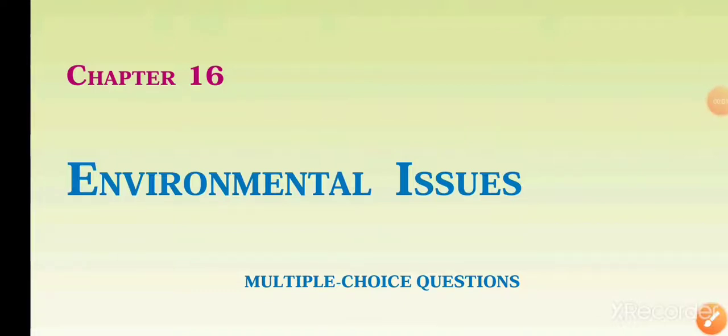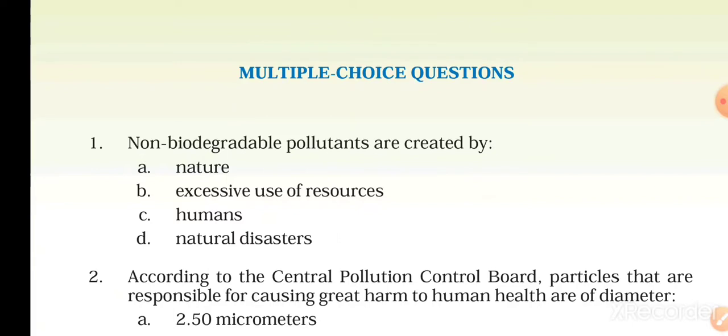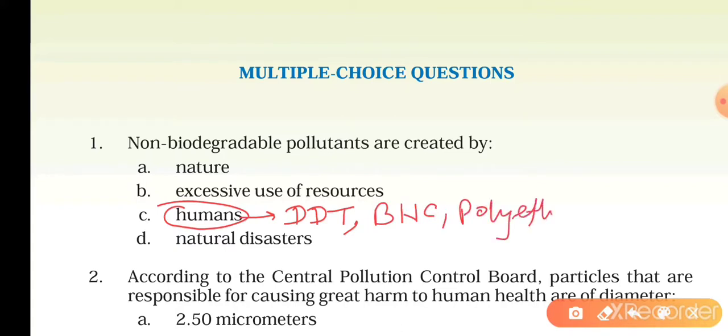Hello guys, welcome to the crash course. Today we will discuss the NCERT exemplar problems on environmental issues. The first question is: non-biodegradable pollutants are created by nature, excessive use of resources, humans, or natural disasters. The right answer will be humans. As you know, like DDT, BSC, and polyethene, these are all produced by humans, so the right answer will be C.